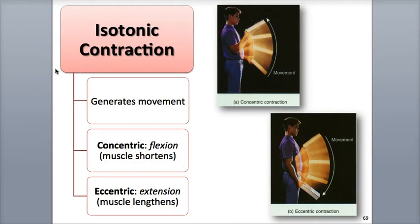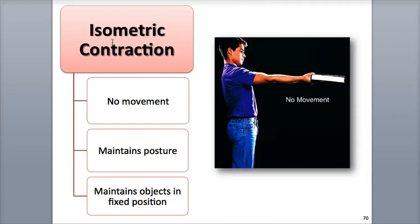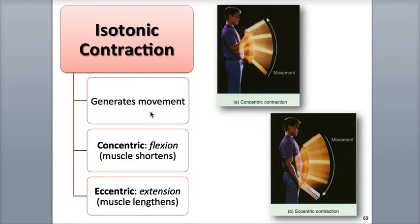When muscles contract, the contractions can be classified as either isotonic or isometric. Isotonic contractions are used to move the body or to move objects.